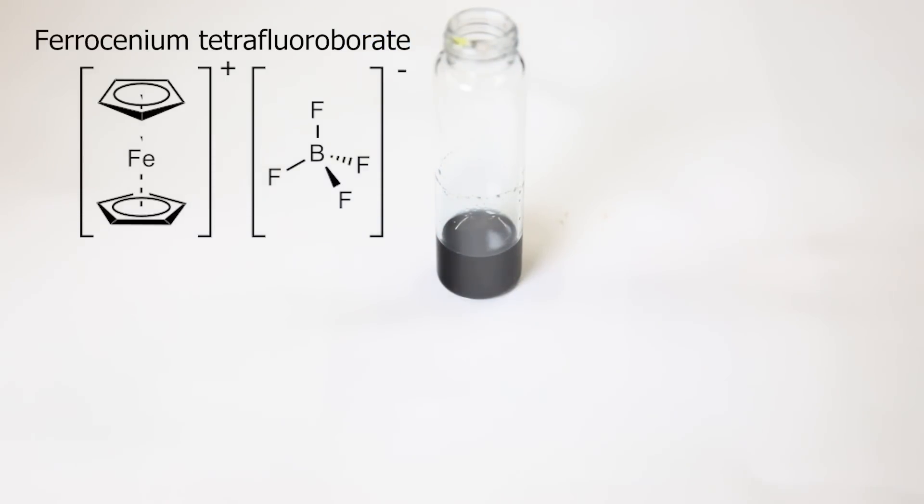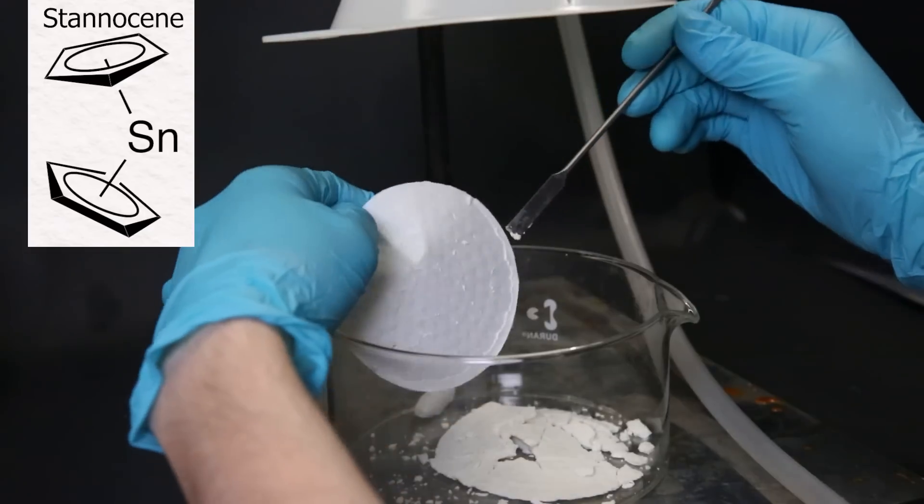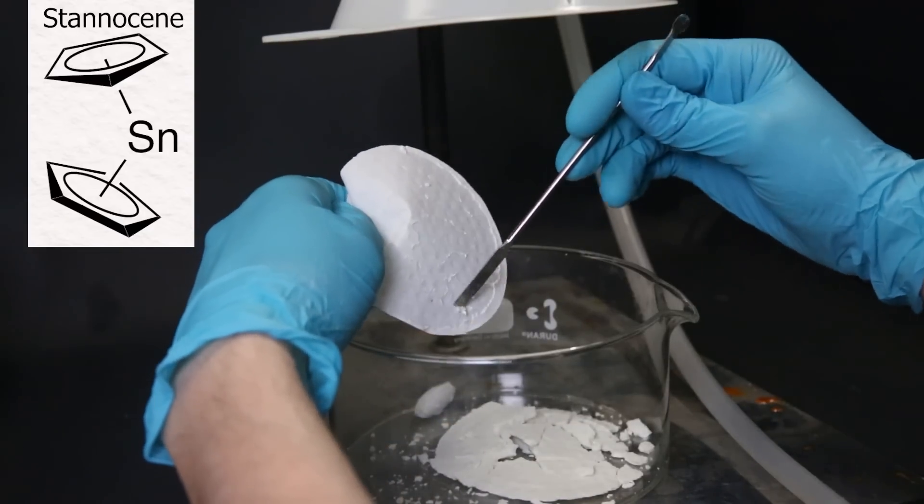So moving on from the ferrocene, I also did this exact same procedure with tin(II) chloride to make stanocene, which is relatively air stable, though not completely. But it was a boring white color, so I will only give it 2 seconds in the spotlight.